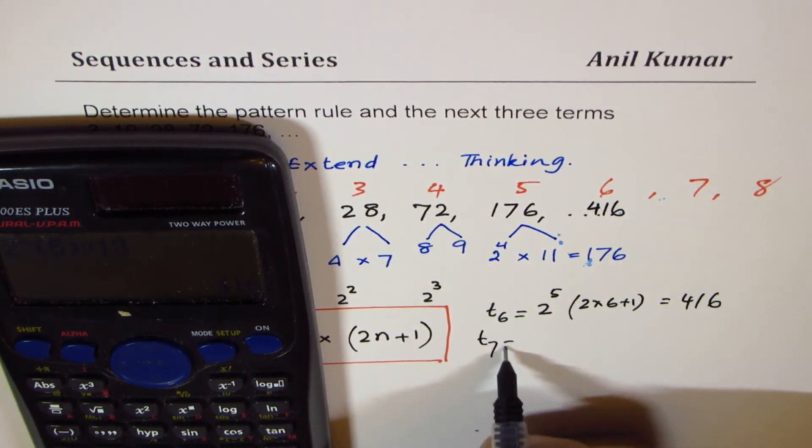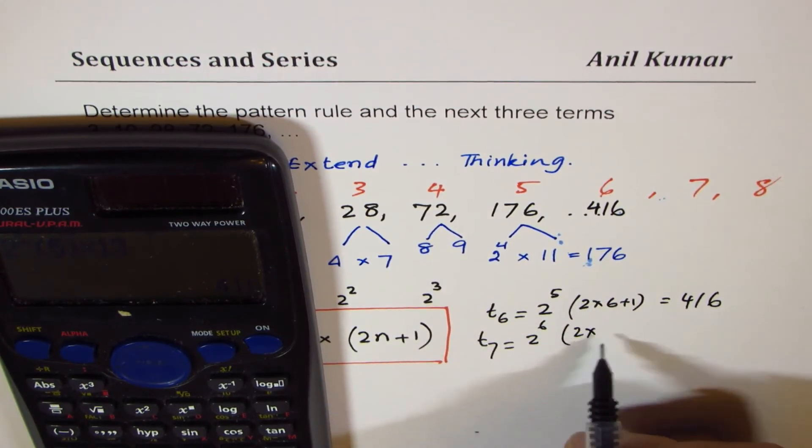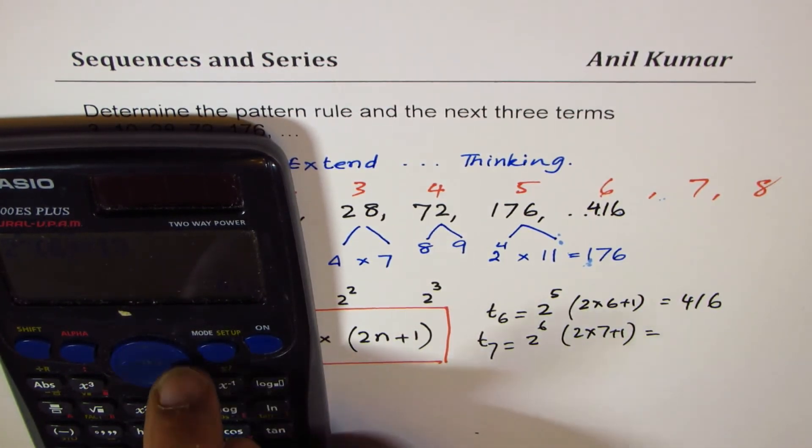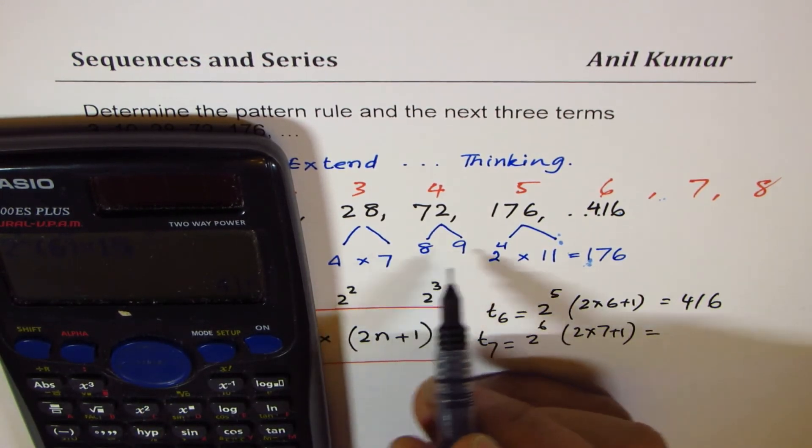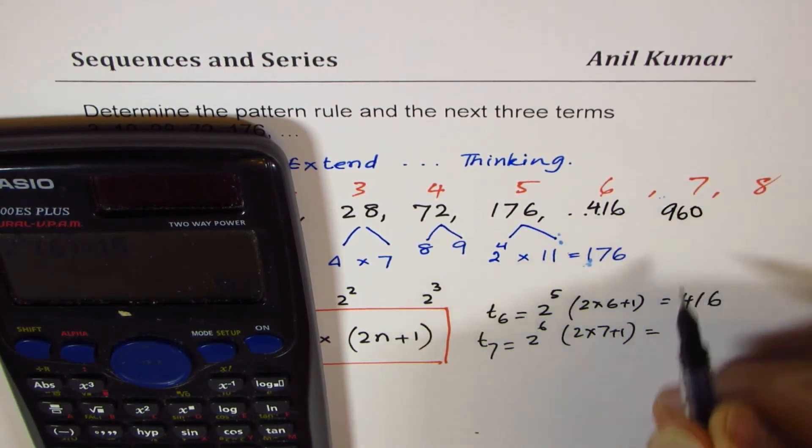The next term, t7, will be 2 to the power of 6, 1 less, 2 times 7 plus 1, which is, so we can just change this to 2 to the power of 6 now, times, and we know, 15, correct? We are going up to the next odd number, which is 960.